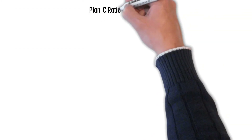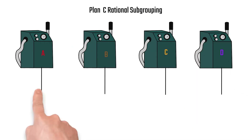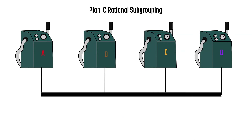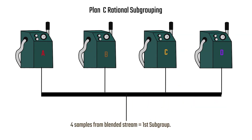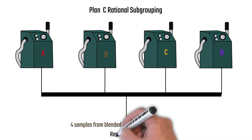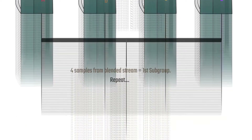Our third subgrouping plan, Plan C: we have our four machines — A, B, C, and D. In the process, the product they're making comes down to a blended stream. We're going to take four samples from the blended stream to form a subgroup and repeat that.